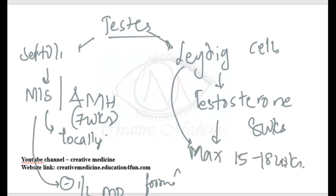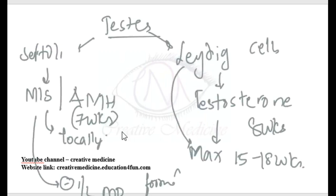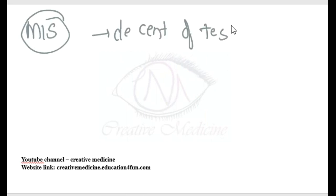Müllerian Inhibiting Substance leads to the regression of Müllerian ducts in males, and it is also responsible for the descent of the testis from the abdomen into the pelvis. This is called abdominal descent.